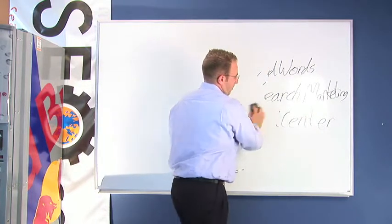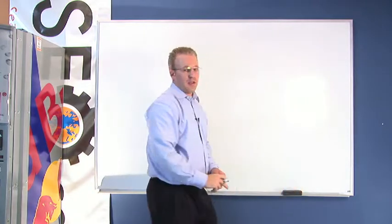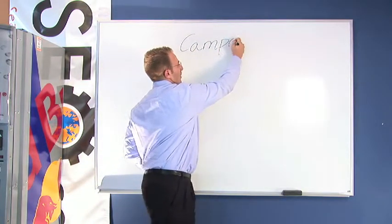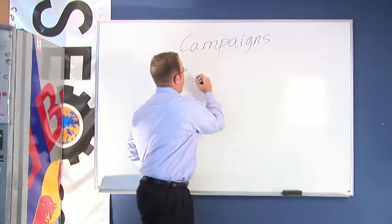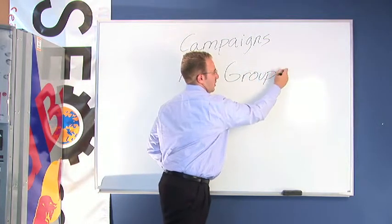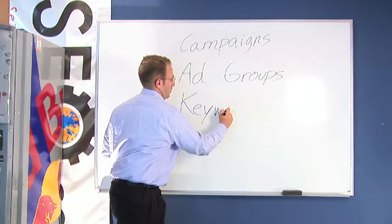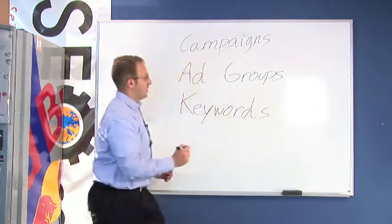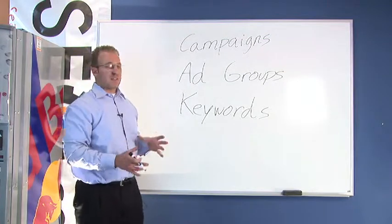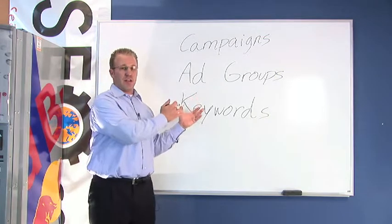When setting up your accounts, there are a few main areas to focus on. These areas are going to be your campaigns, your ad groups, and your keywords. Each of these sections of sponsored search marketing have different relevancy to how they interact with the characteristics of how your sponsored search marketing is displayed.